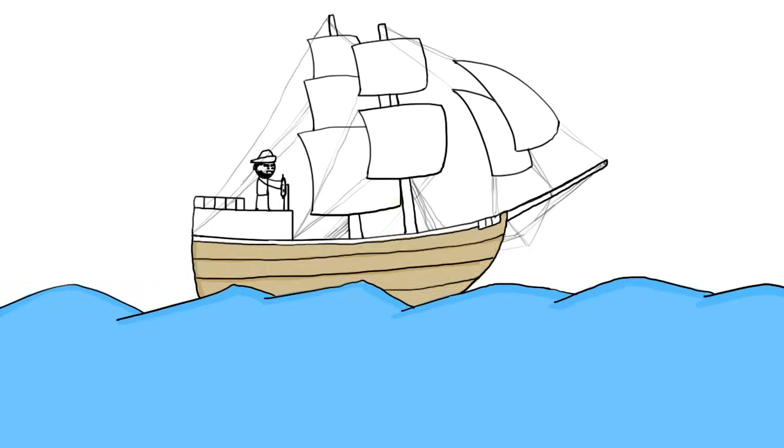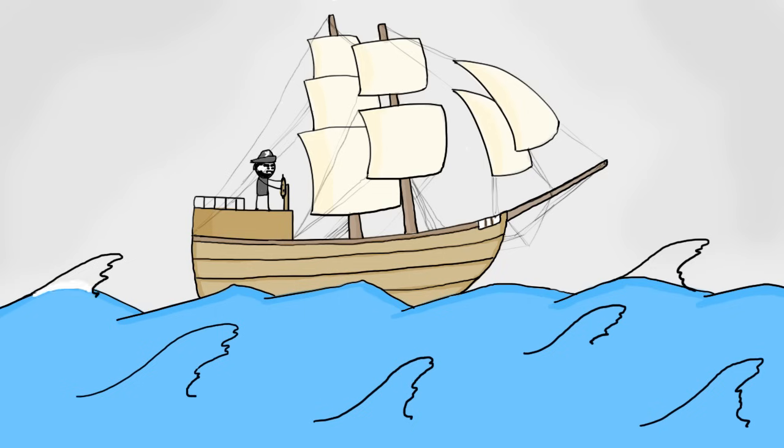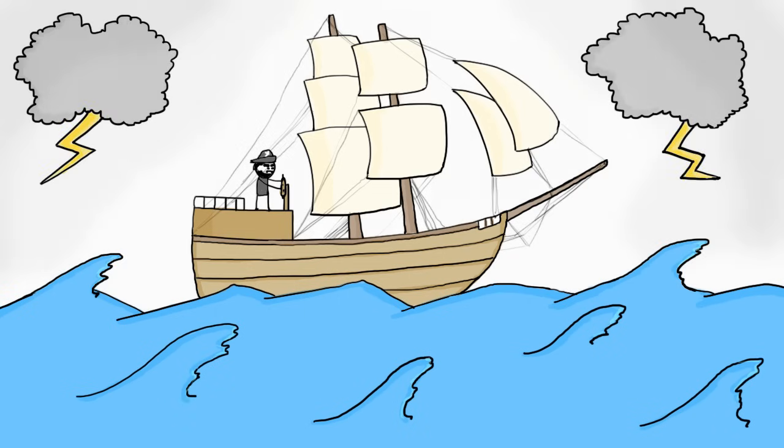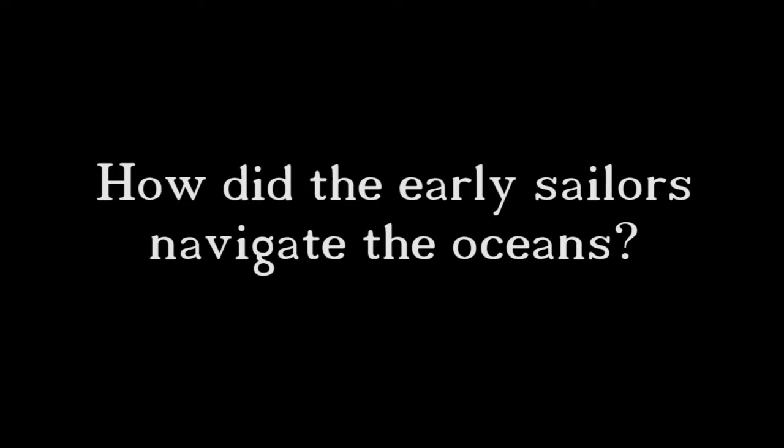The early ocean voyages were probably big mistakes. A vessel could be thrown off course by a sudden storm or error by the helmsman. So, how did the early sailors navigate the oceans?